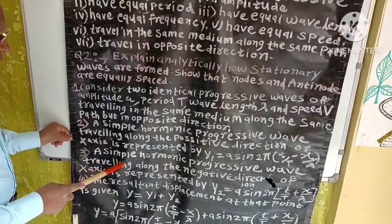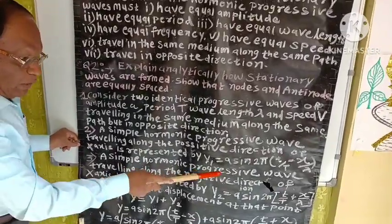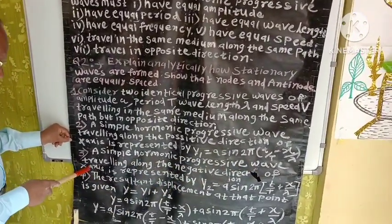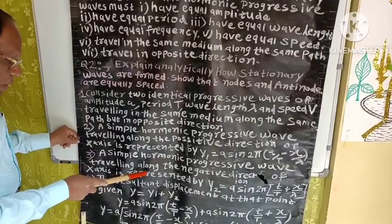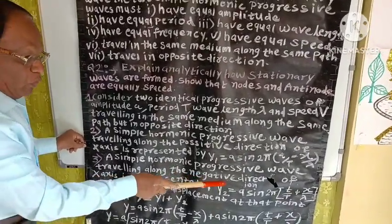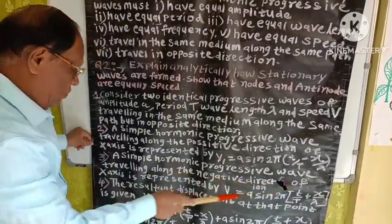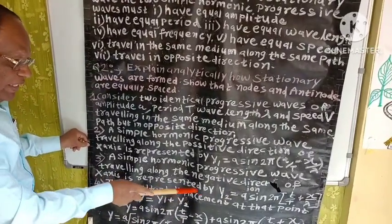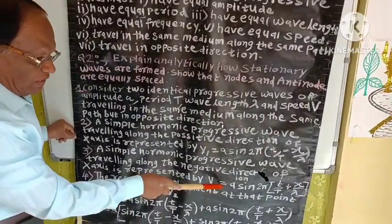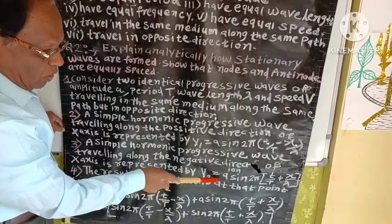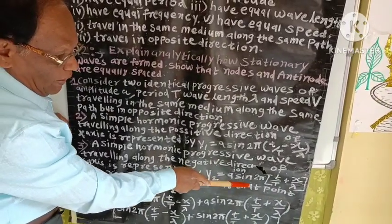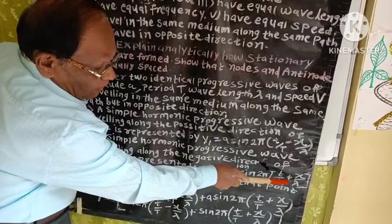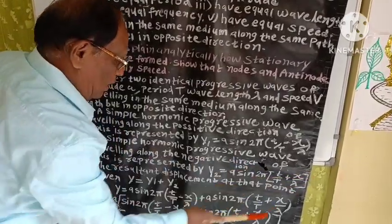Third point: A simple harmonic progressive wave travelling along the negative direction of the X-axis is represented by Y2 = A sin 2π (t/T + x/λ).